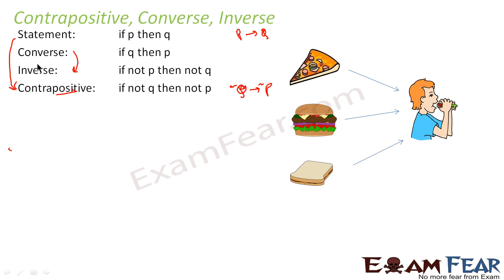For converse: since 'con' means you just change direction, if the statement is p to q, you just change direction and it becomes q to p. That is the converse.